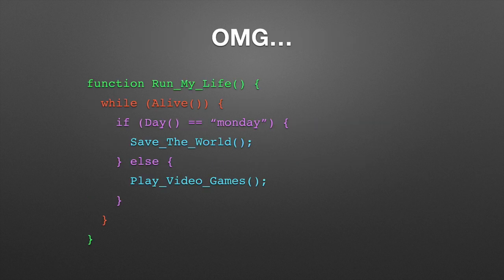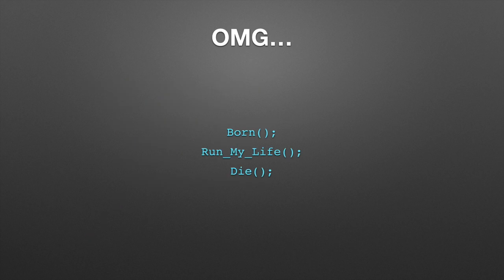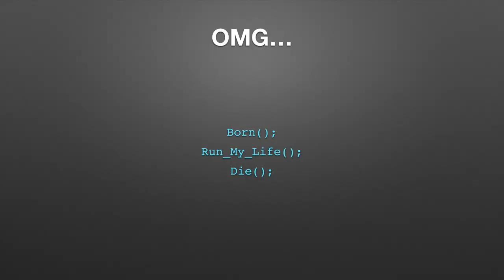Function 'run my life': as long as I'm alive, if it's Monday, save the world. All the other days, play video games — that's pretty cool. And finally, we've reduced all of that to three lines. First you're born, you live your life, and you die. Now that's pretty philosophical, but that's powerful programming — hiding information, bury it in functions. And that's it.